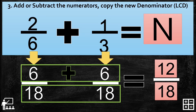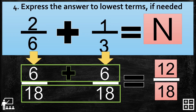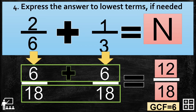But 12 and 18 have a lowest term, so we proceed to step 4: express the answer to lowest term if needed. We find the GCF of 12 and 18, which is 6. So we divide 12 by 6 to get 2, and 18 by 6 to get 3. Our final answer is 2 over 3.